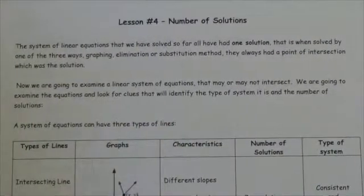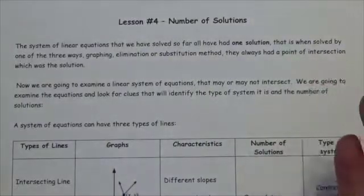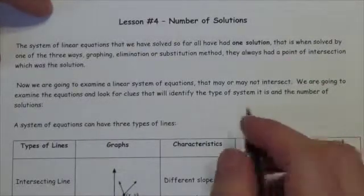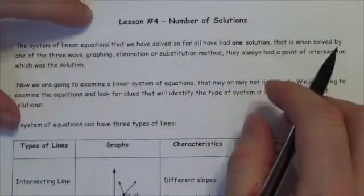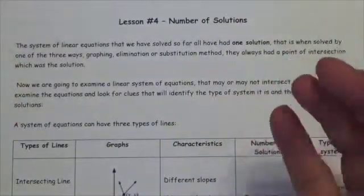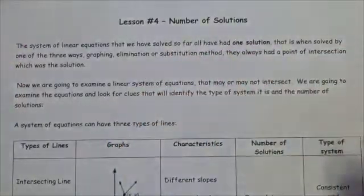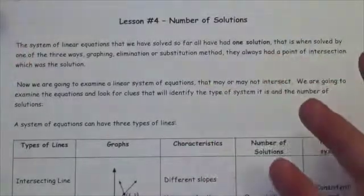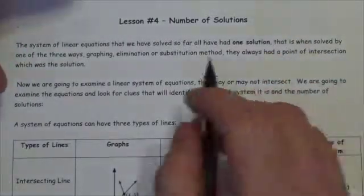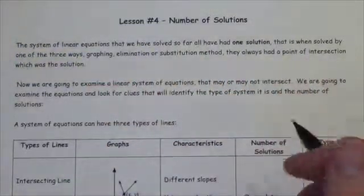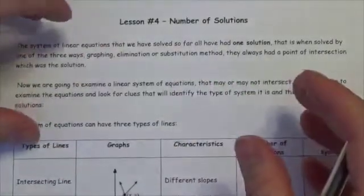In the previous couple of lessons you may have noticed that every linear system that we solved had a solution to it. Whether we solved it algebraically or graphically there was always a solution. Now that does not always necessarily have to be the case, and we're going to look at the number of solutions that you get to a linear system and under what circumstances you get those different numbers of solutions.